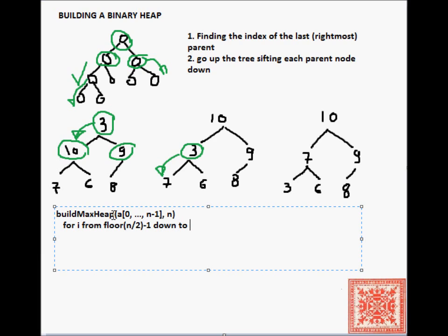We have an array from 0 to n-1, and n is the length of that array. As we have seen before, we're going to find the index of that rightmost non-leaf node, which is the floor of n/2-1, and then we're going to go left to the root.